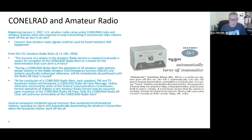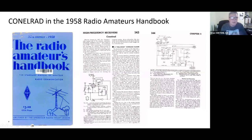Several companies, including Heathkit, did market special receivers that could be connected directly to amateur radios — they would monitor the 640 and 1240 frequencies and automatically turn off the transmitters if an alert was issued. And in the 1958 Radio Amateur's Handbook, there are circuit designs for Conelrad alarm detection as well as circuits that could be connected to your transmitter to shut down transmissions at the time of an alert.